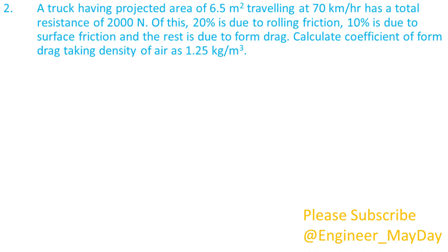Here is a second question. A truck having projected area of 6.5 square meters traveling at 70 kilometers per hour has a total resistance of 2000 newtons. Of this, 20% is due to rolling friction, 10% is due to surface friction, and the rest is due to form drag. Calculate the coefficient of form drag, taking density of air as 1.25 kilograms per cubic meter.